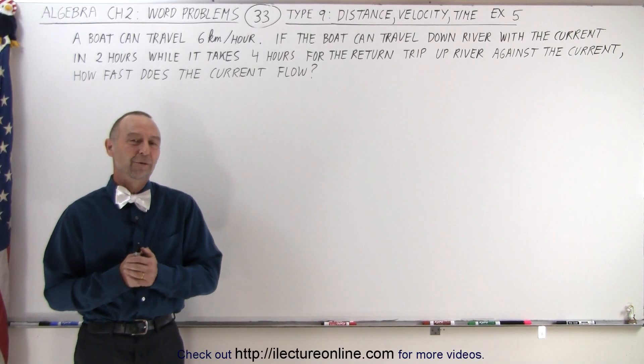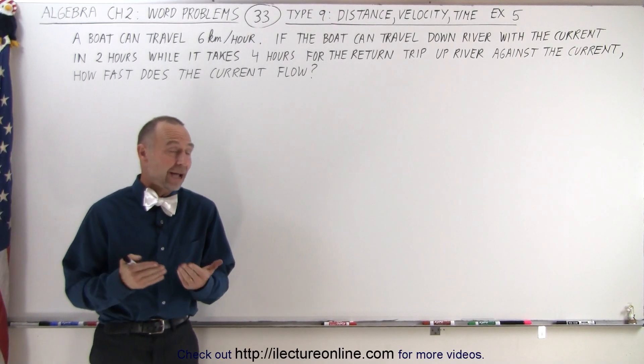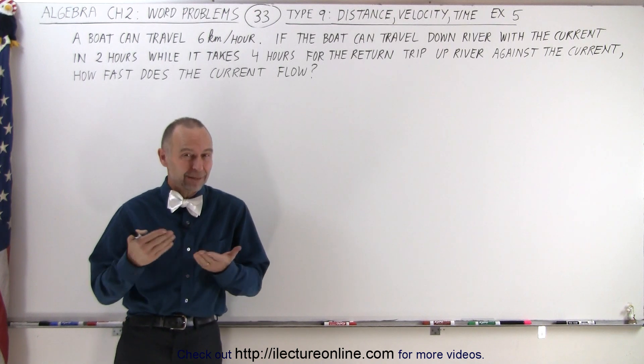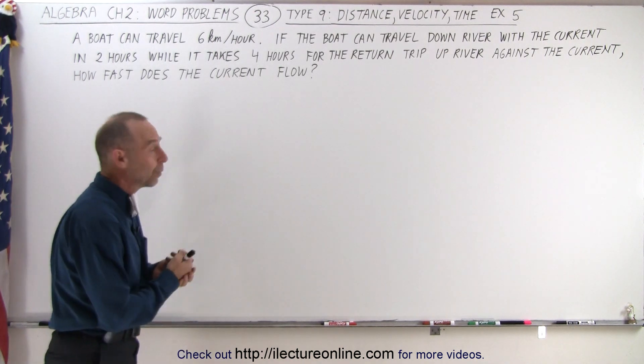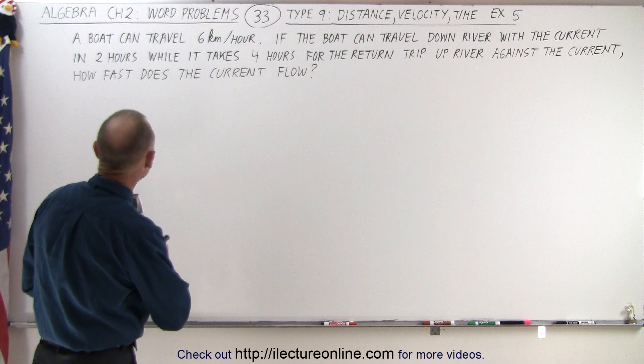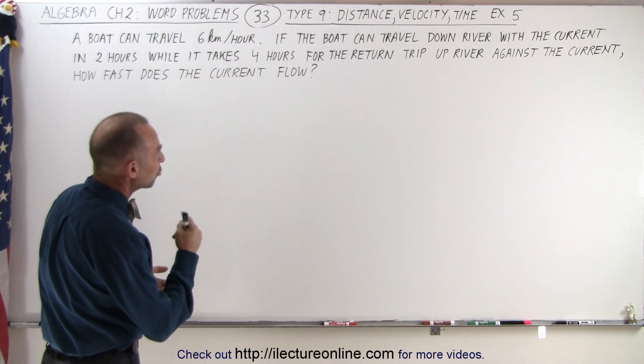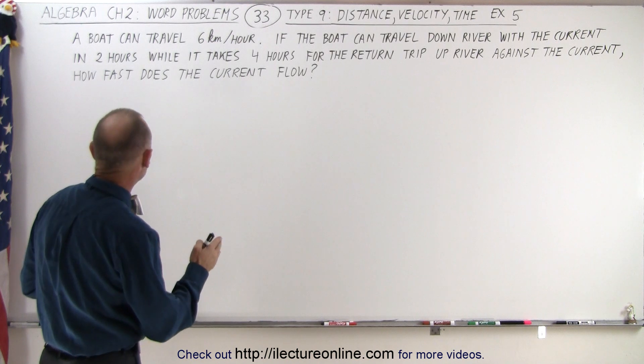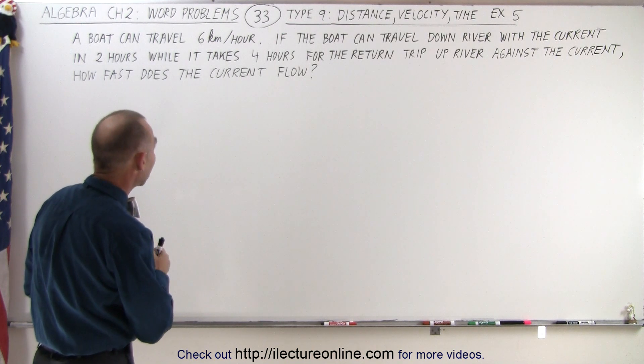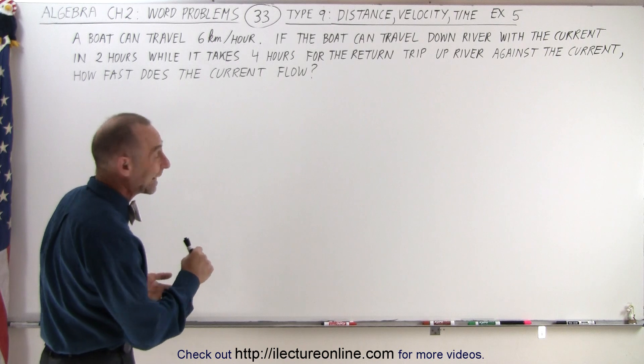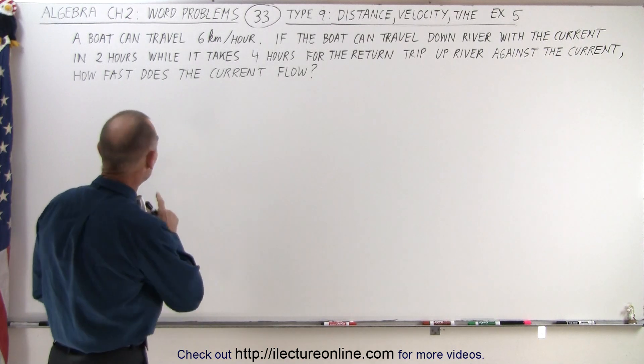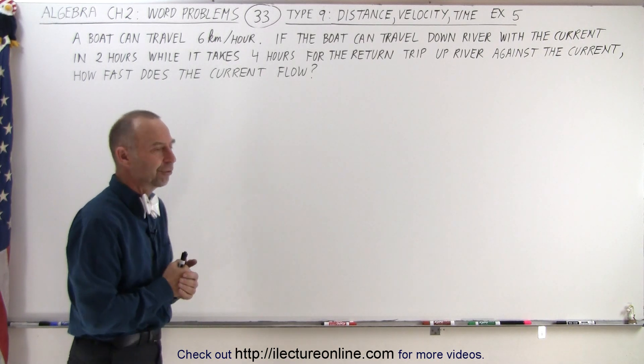Welcome to ElectronLine. For our fifth example of this type, distance, velocity, time type of word problems, we have one with a boat. Let's say that the boat can travel 6 km per hour. If the boat can travel downriver with the current in 2 hours, while it takes 4 hours for the return trip upriver against the current, how fast does the current flow?